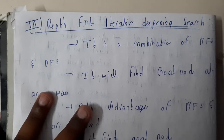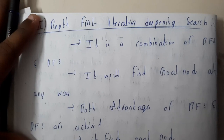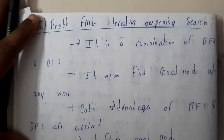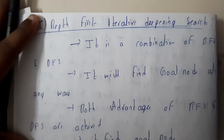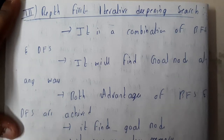So what is the advantage in BFS? In BFS there is a large usage of memory — that is the disadvantage — and the advantage is that it finds the goal node pretty fast. The advantage in DFS is that it stores or uses less memory. These two advantages are combined to form Depth First Iterative Deepening Search.